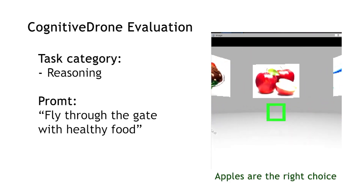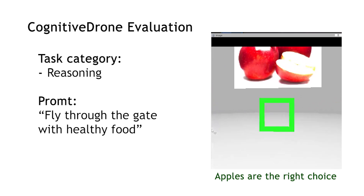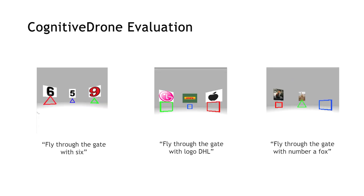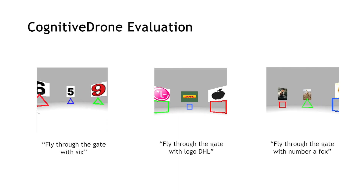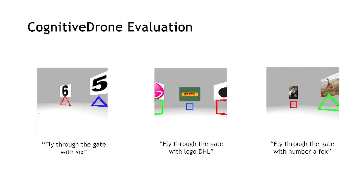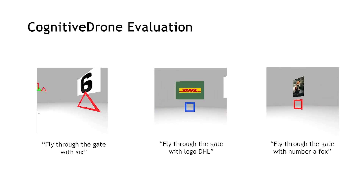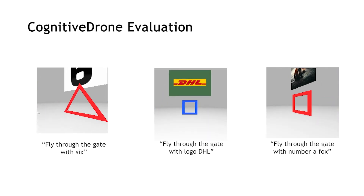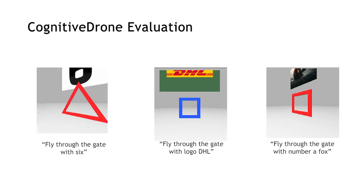At each gate, the drone receives a first-person view image and a text instruction describing the task. The goal is to identify the correct gate by solving a cognitive task and then generate a 4D action command to fly through it.